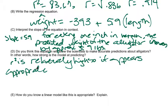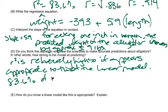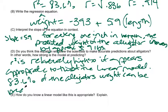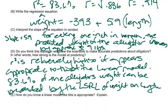So we would say r squared is relatively high, so it appears appropriate to trust the linear model. 83.6 percent of the alligators weight can be predicted by the regression line of length on weight.